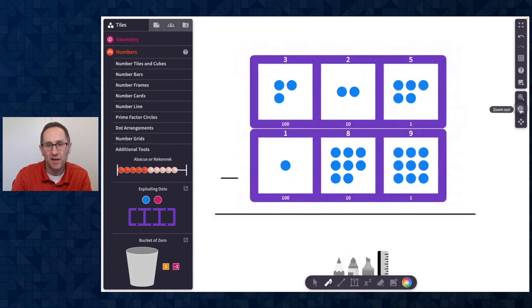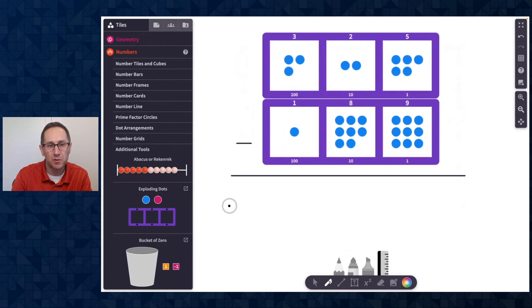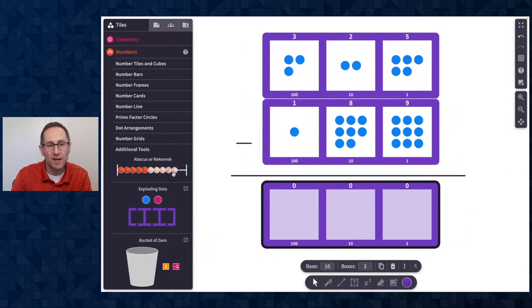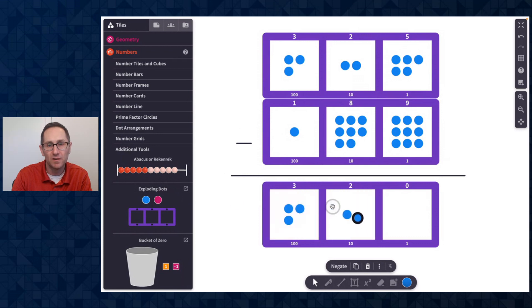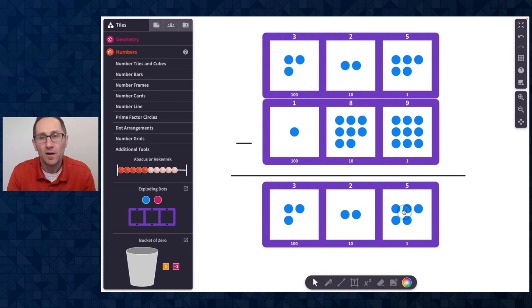And I'm going to show my answer in another exploding dot machine. So let me do this. And I'm going to build 325 again as my starting point. 325. And notice as I was putting dots in the machine, I can see these labels at the top that are showing me I have three hundreds, two tens, and five ones.